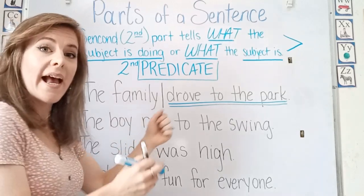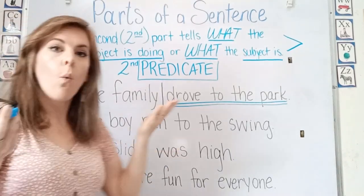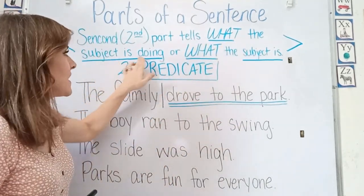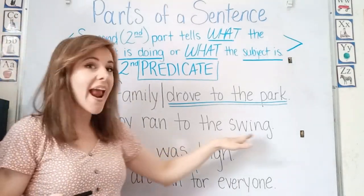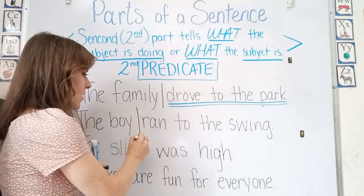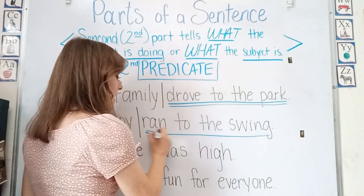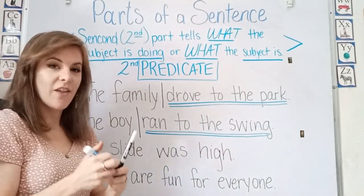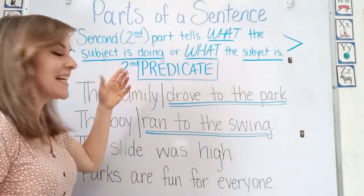The boy ran to the swing. What did the boy do? So what is the subject doing? The boy is our subject, and he ran to the swing. So this part is telling us what the boy did — he ran to the swing. It's telling us what the subject did.